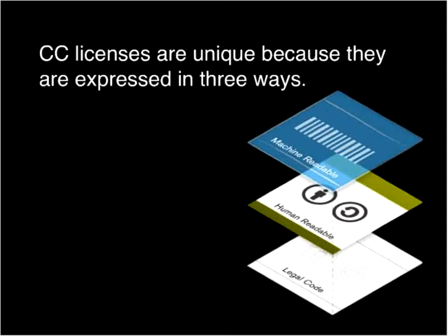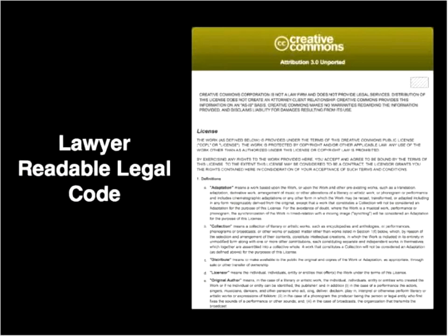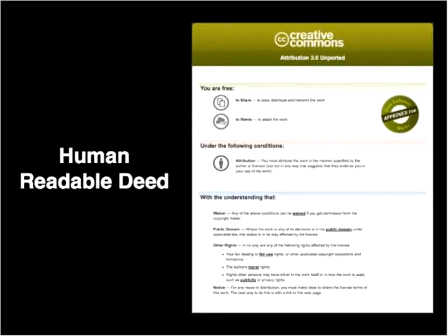Creative Commons licenses are really unique because they are expressed in three ways, and they are specially designed for the digital age. At base, each license is a traditional legal tool — with the kind of language and text formats that lawyers know and love. We call this the legal code layer of each license, and it has been vetted by a global team of legal experts, making CC licenses enforceable in a court of law. But since most creators, educators, artists, and scientists are not lawyers, we also make the licenses available in a format that normal people can read and understand — called the commons deed, or the human-readable version of the license. It summarizes the most important terms and conditions into a few universal icons and non-technical language — basically for people like you and me who just want to know very quickly what we can and can't do with the work.